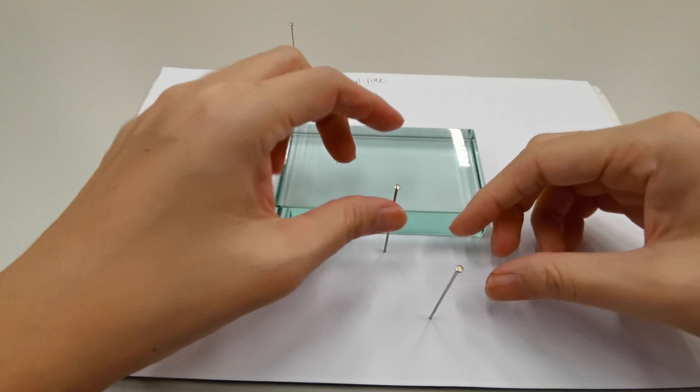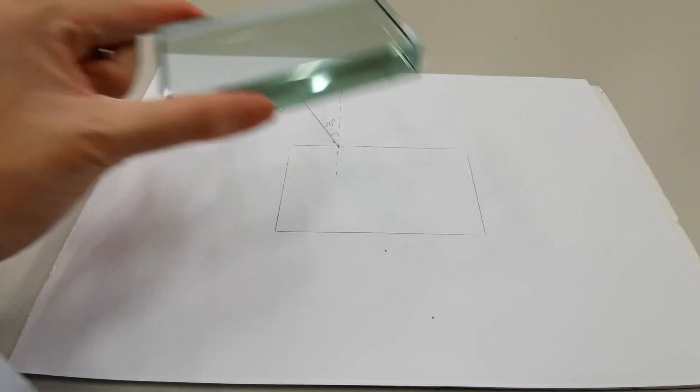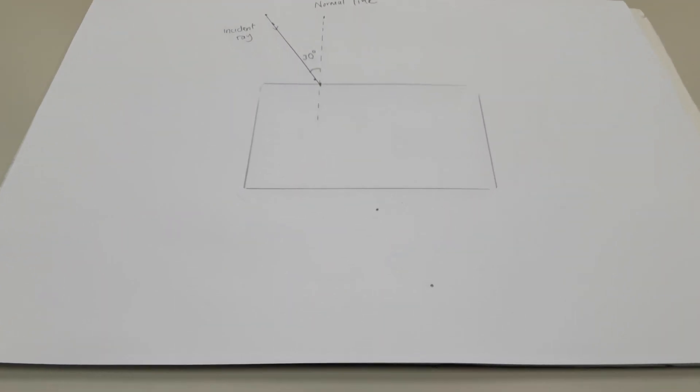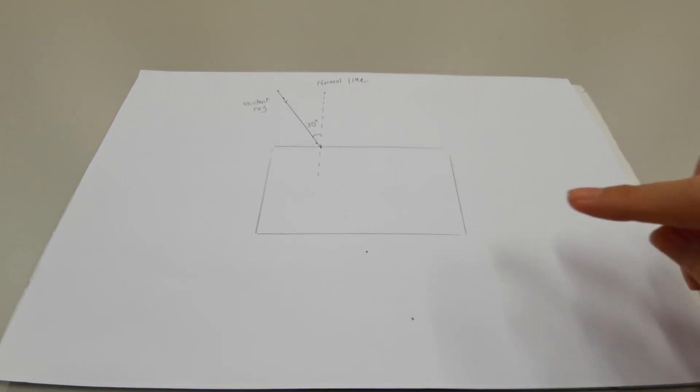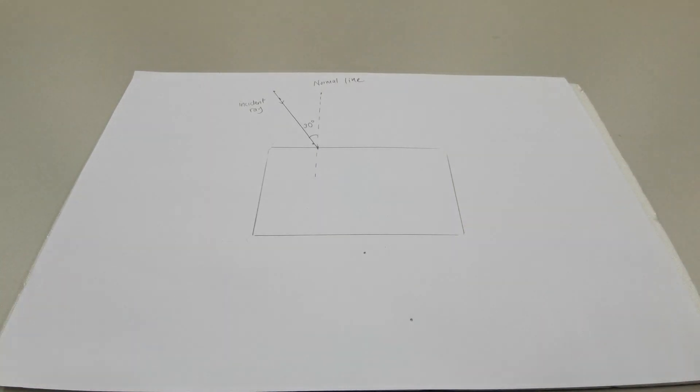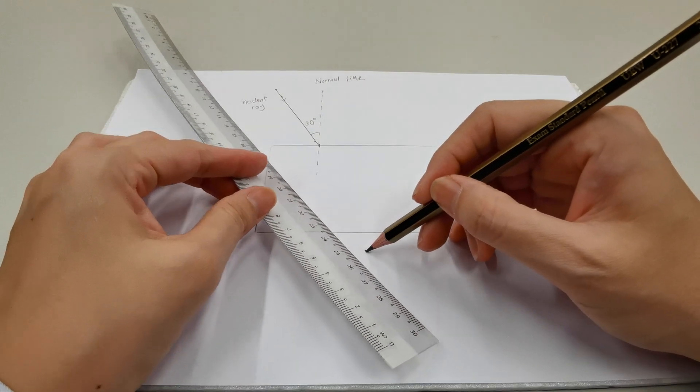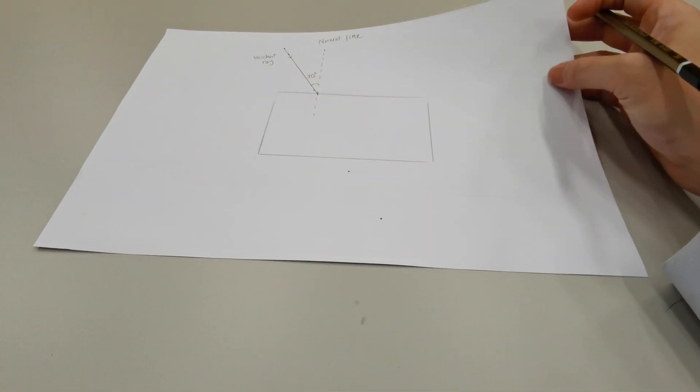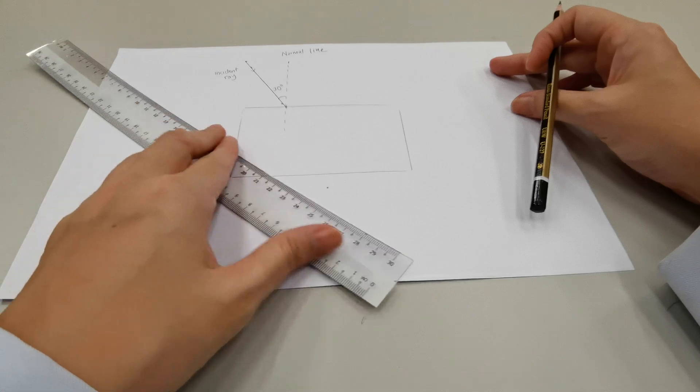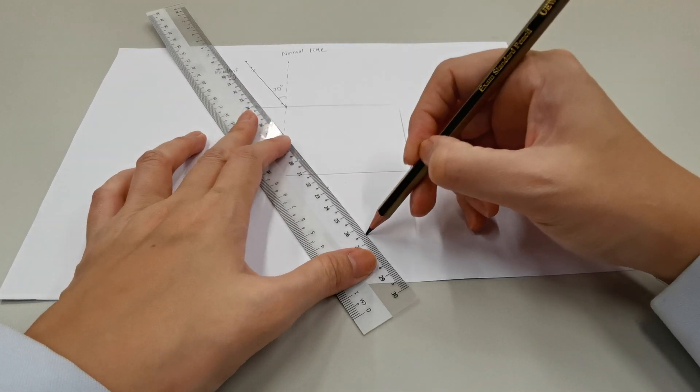What we will do next is remove all the pins and the glass block. Now, you should be able to see the holes made by the pins that we placed on the other side of the glass block quite clearly. We will use a sharp pencil and a ruler to connect these two holes in order to draw the emergent ray. The line of the emergent ray should be extended until it touches the edge of the rectangular glass block.